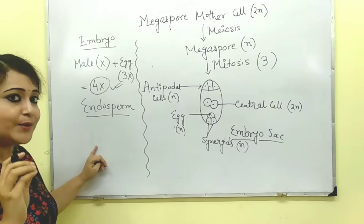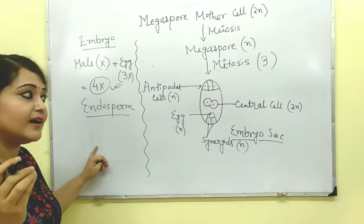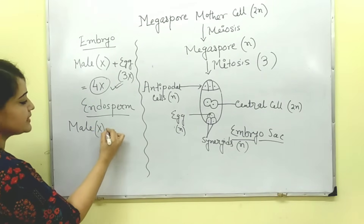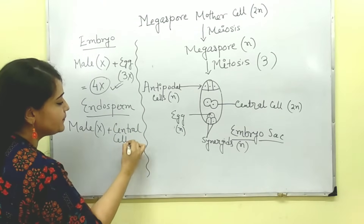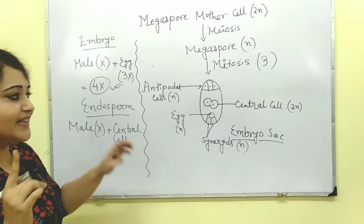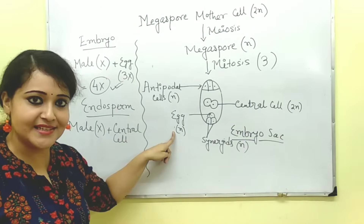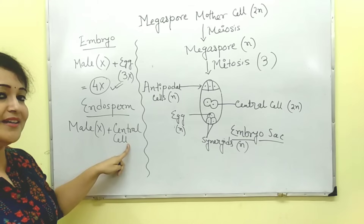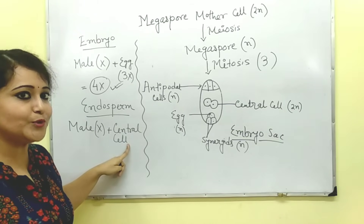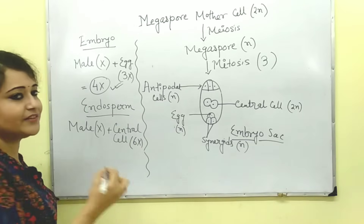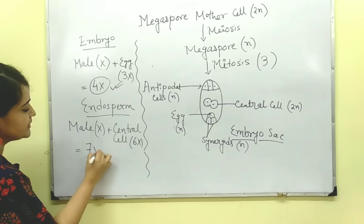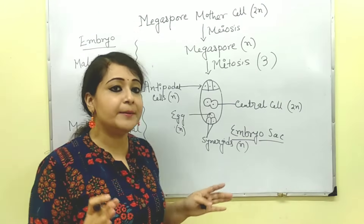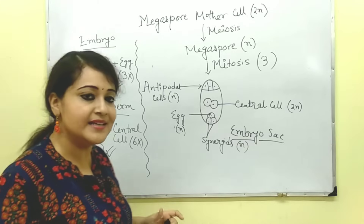The next part is a bit difficult, but once you get this concept you can solve any question within minutes. Endosperm — how is endosperm produced? Endosperm is formed by fusion of a male gamete and the central cell. Male gamete is X. The ploidy of the central cell is double that of the egg cell. Since the egg cell is 3X, the central cell would be 3 times 2, that is 6X. So the total: X plus 6X is 7X. The ploidy level of embryo is 4X and that of endosperm is 7X.